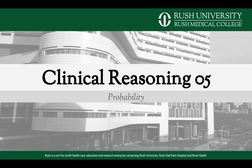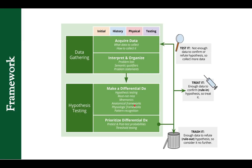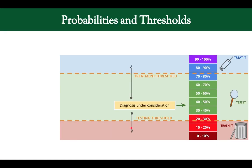Welcome to this fifth lecture on clinical reasoning. In this one we're going to talk about probability. Here is our framework, and we're going to be in this box here, prioritizing a differential diagnosis. And in order to have the skills to do this, we need to learn first about probabilities and thresholds. So that's what we're going to talk about today.